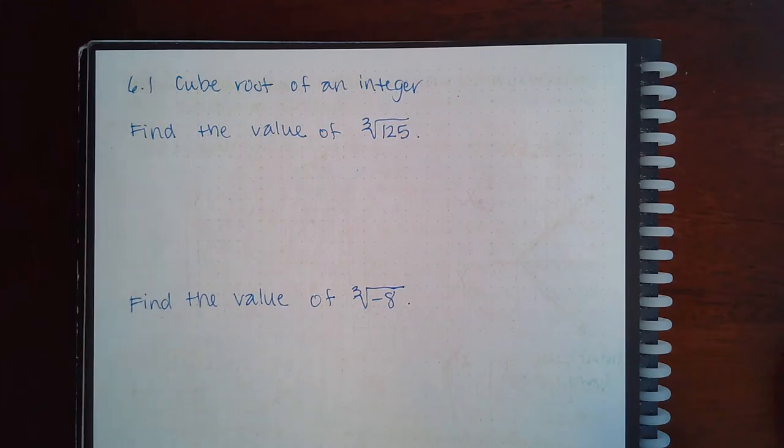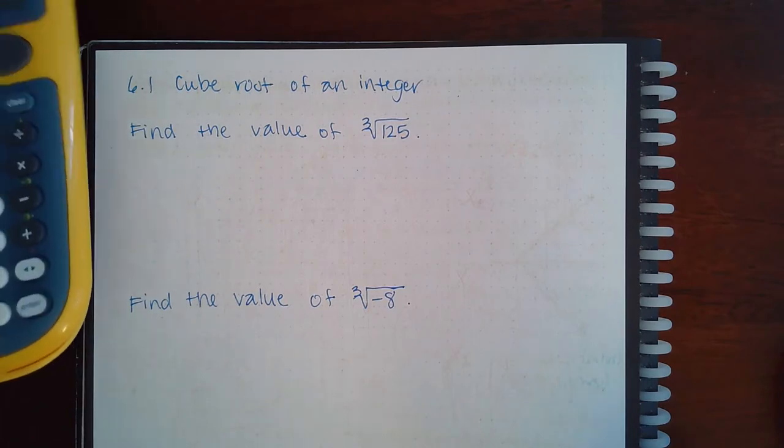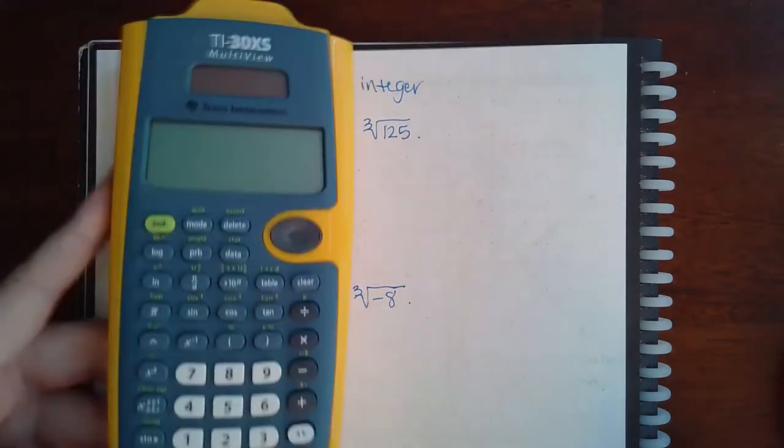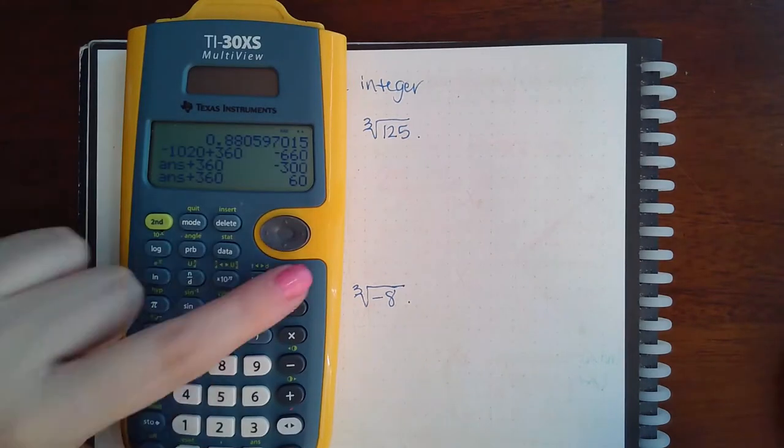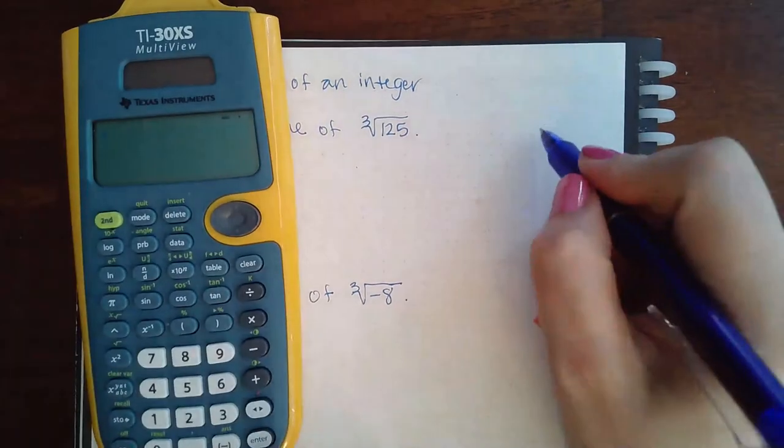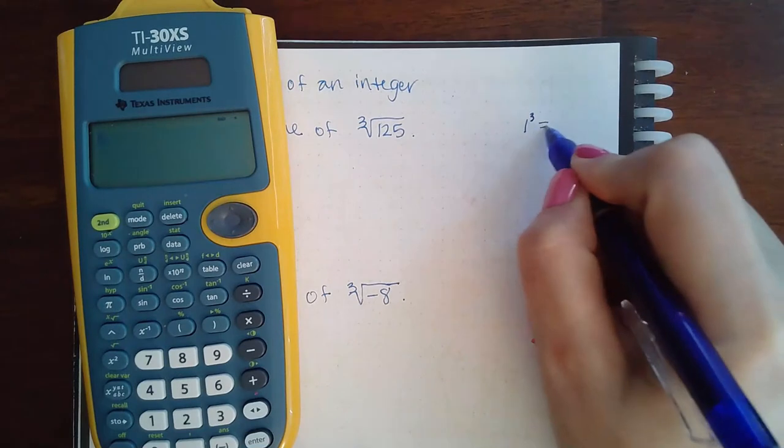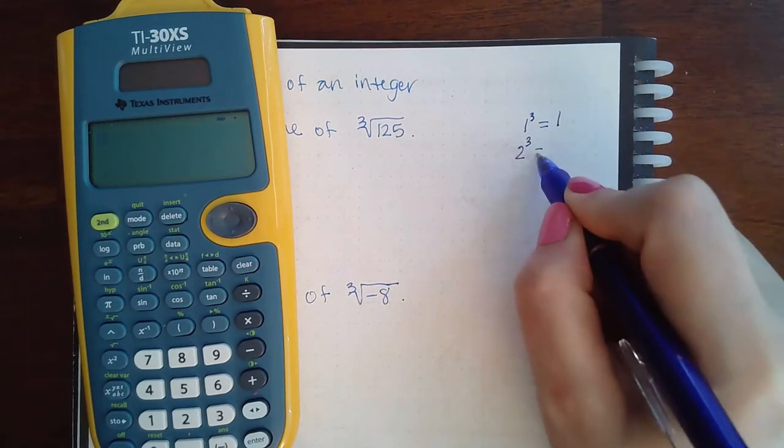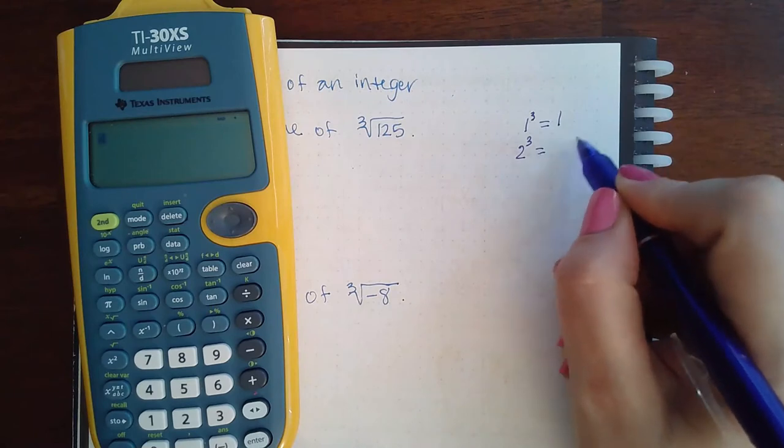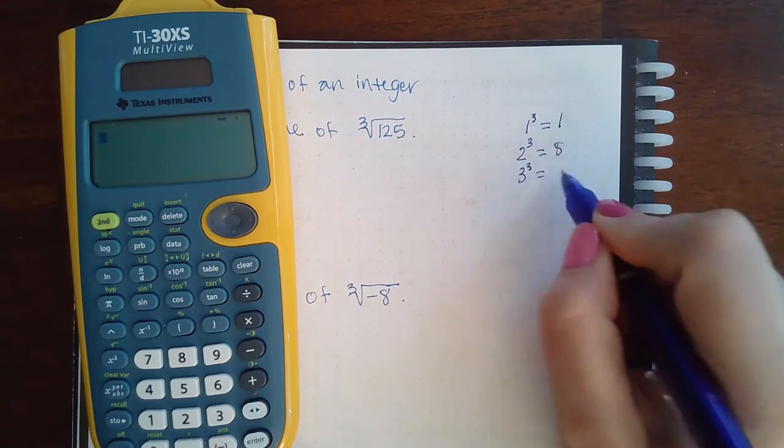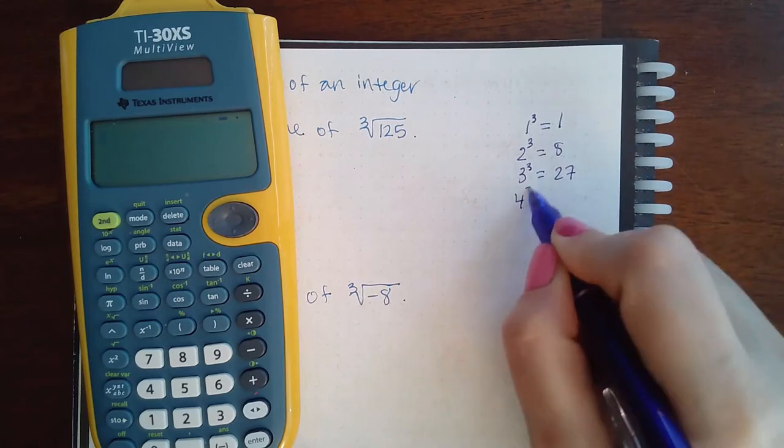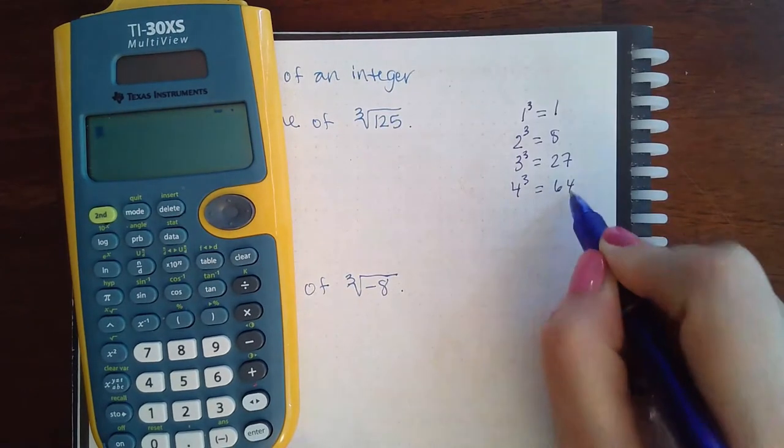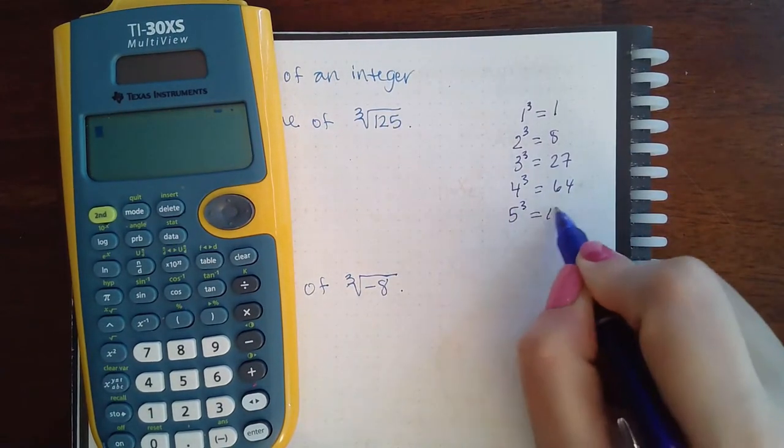Now, it is good to memorize a few cube roots, at least 1 through 10. When I say cubes, I know that 1 cubed is 1 times 1 times 1, which is 1. 2 cubed is 2 times 2 times 2, which is 8. Similarly, 3 cubed is 27, 4 cubed is 64, and 5 cubed is 125.